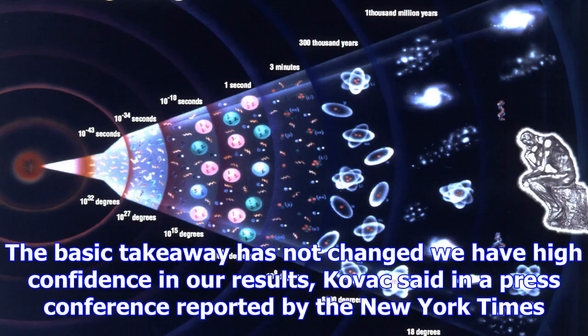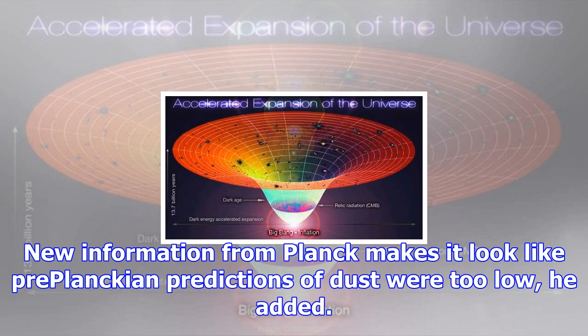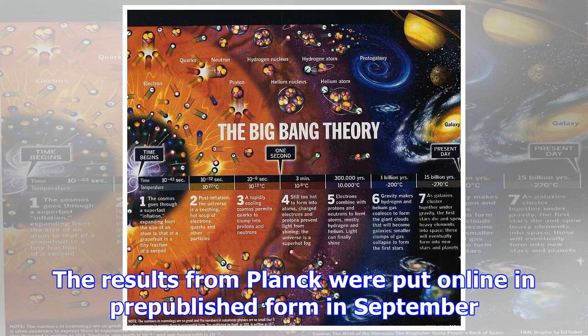But by June, the same team said that their findings could have been altered by galactic dust getting in the way of their field of view. The basic takeaway has not changed. We have high confidence in our results, Kovac said in a press conference. New information from Planck makes it look like pre-Planckian predictions of dust were too low, he added.